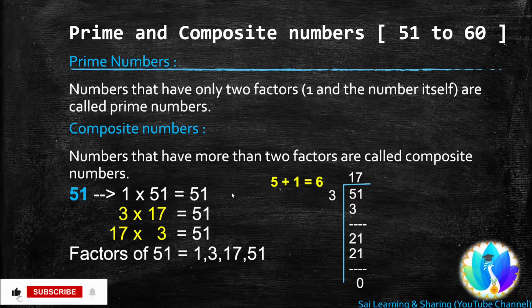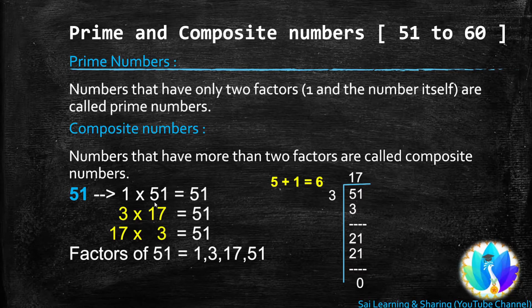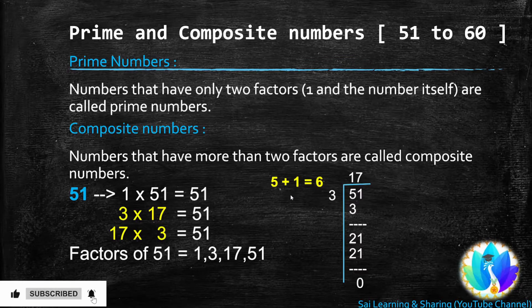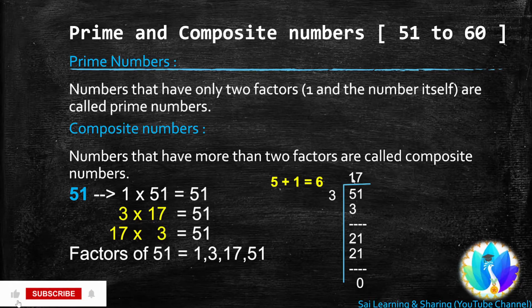To find whether a number is prime or composite, we have to find all its factors. For 51: 1 is a factor of every number, so 1 times 51 equals 51. 51 is not a multiple of 2 because the ones digit is not even. 51 is a multiple of 3 — using the divisibility rule, 5 plus 1 equals 6, and 6 is a multiple of 3. So when we divide 51 by 3, we get quotient 17.